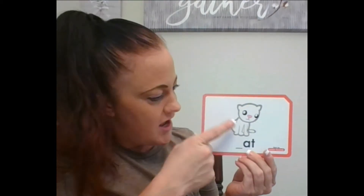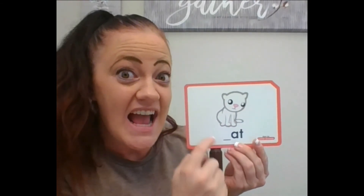All right, I've got my cards here with the missing letters. Can you guys help me figure out what's missing? Cat. So what's the missing letter? It's the first letter in C-A-T. C is the missing letter. C-A-T, C-A-T.